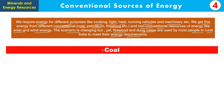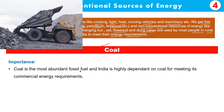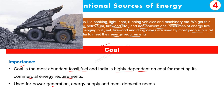The first conventional source is coal, also known as koila. Coal is the most abundant fossil fuel. Fossil fuels are formed from organic remains of plant and animal life over millions of years. India is highly dependent on coal because it is found in large quantities here. Most of our thermal power plants use coal or natural gas, and coal is also used for commercial energy requirements in industries, power generation, electricity production, energy supply, and domestic needs.